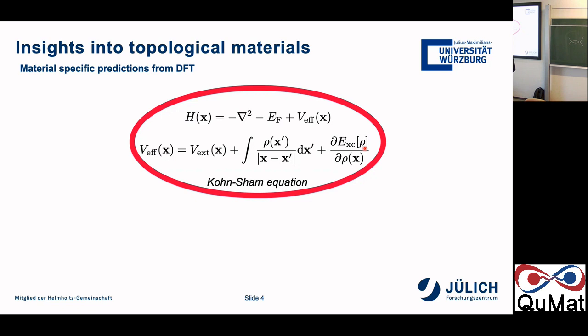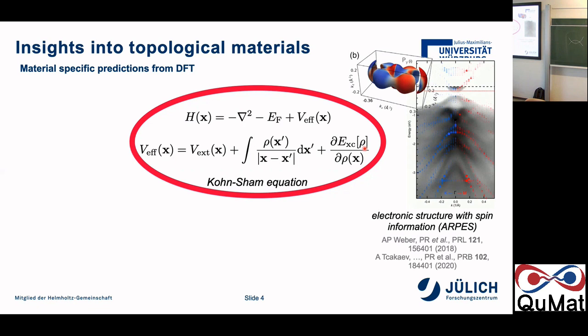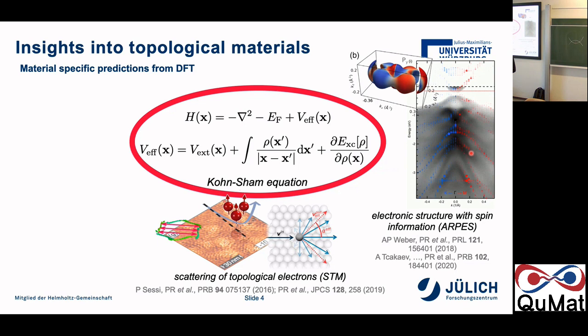We need supercomputers, but they are available all over the world. We are able to predict a lot of properties, all connected to the electronic structure of materials. For example, we can compute the electronic structure, which is also measured with angle-resolved photoemission. A specialty of the method we use is that we can also deal with defects embedded in crystals, giving us access to scattering properties — how electrons scatter off defects embedded in materials, which is something you can see in STM experiments.